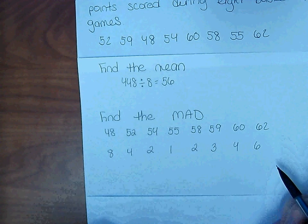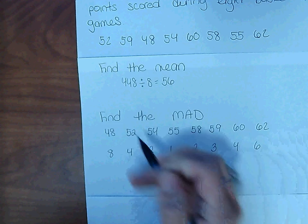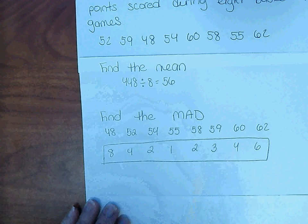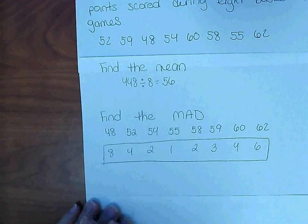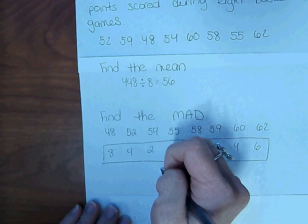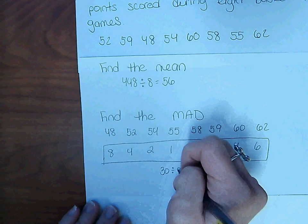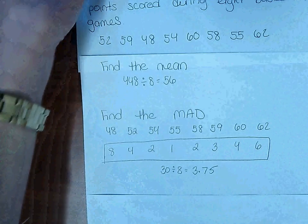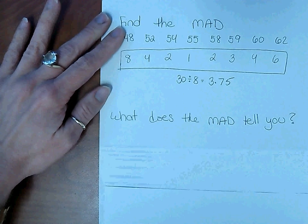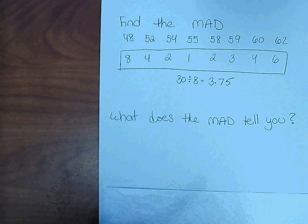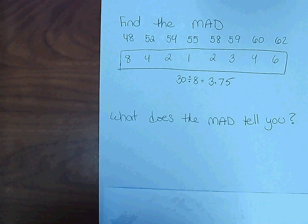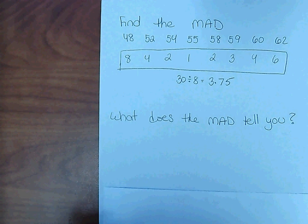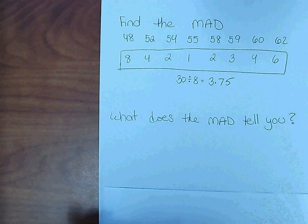Now we need to find the average of all of these numbers. We add all of these together and divide by 8, because there are 8 numbers in our data. When we add all these, we get 30. Divide that by 8 and the MAD is 3.75. So what does the MAD tell you? The MAD is the average distance between each data value, and in this case that tells us the average distance between each data value is 3.75 points.